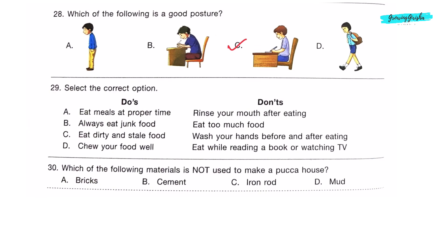Question 29: Select the correct option. Do's: Chew your food well. Don'ts: Eat while reading a book or watching TV. Option D is the correct answer. Question 30: Which of the following materials is not used to make a pakka house? Mud is used to make kaccha house. Brick, cement and iron rod are used to make pakka house. Option D: Mud.